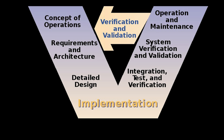In software development, the V model represents a development process that may be considered an extension of the waterfall model, and is an example of the more general V model. Instead of moving down in a linear way, the process steps are bent upwards after the coding phase to form the typical V shape. The V model demonstrates the relationships between each phase of the development life cycle and its associated phase of testing.